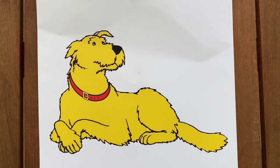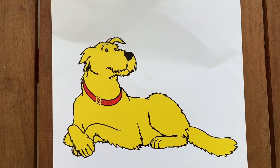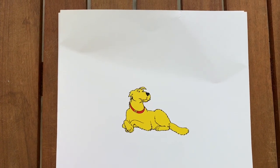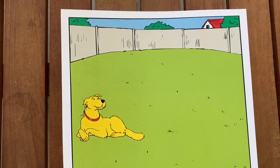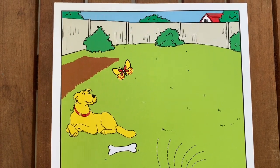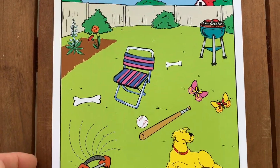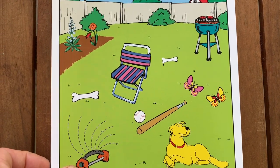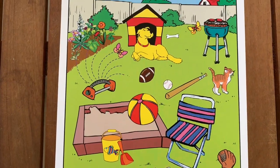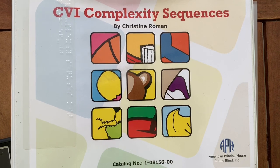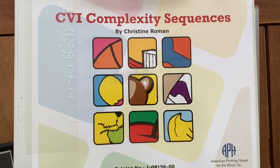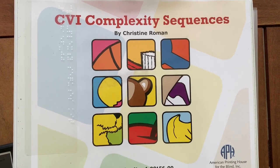Sienna will select which exercise she wants to perform and then we will have her try to identify the specific character on each one of the pages in the sequence. As we go through the pages the pictures become more complex, therefore it is more difficult to find the character. For example, with the yellow dog the first picture is very large and it's definitely easy to see. As we go through the sequence the picture changes, it becomes smaller, we add a background, we add more details. Today we are going to see how far Sienna will go through the sequence and try to have a little fun while performing the exercise, giving her breaks so she can continue.